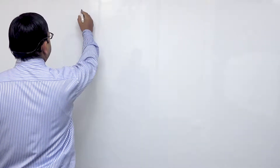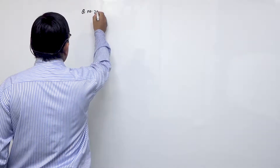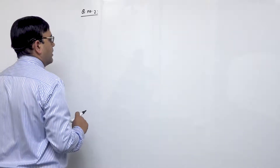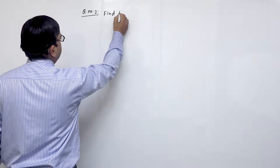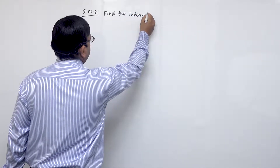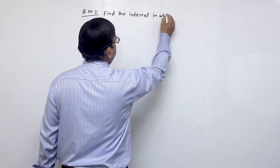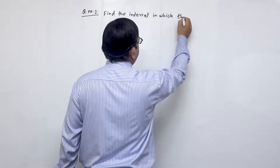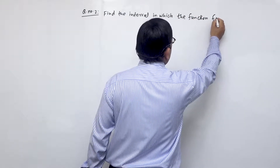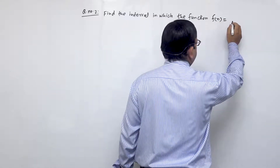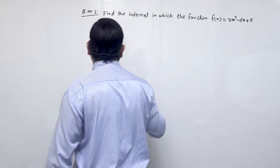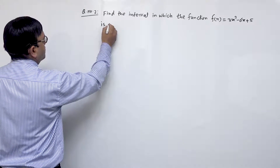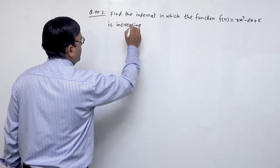Now we are going to start question number 2. In this question, we are going to discuss finding the increasing or decreasing interval. Find the interval in which the function f(x) = 3x² - 6x + 5 is increasing or decreasing.